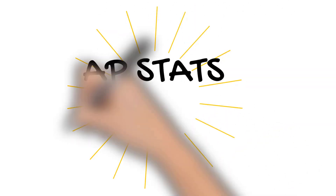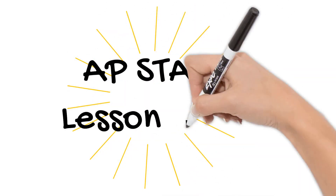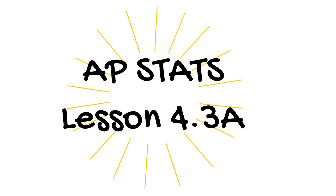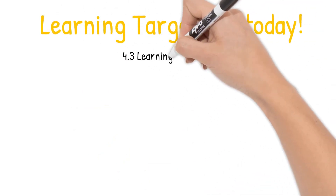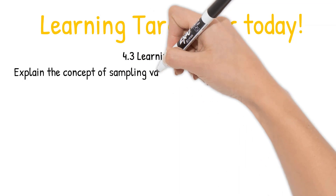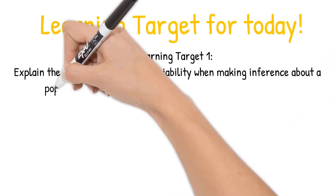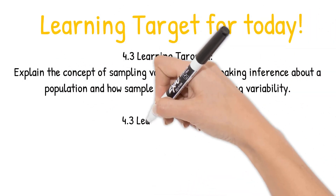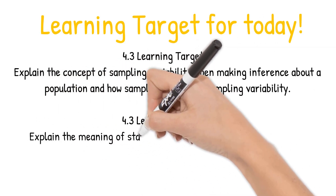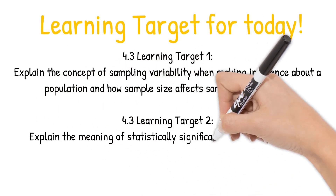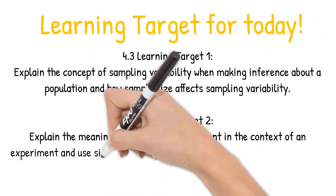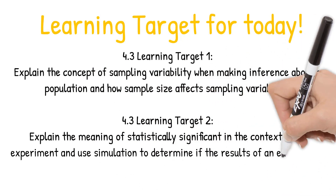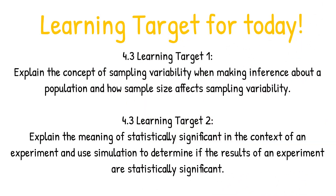Hi, this is Mrs. Morita. Welcome to AP Stats Lesson 4.3a. Two learning targets for today, 4.3.1 and 2. Explain the concept of sampling variability when making inference about a population and how sample size affects the sampling variability. Explain the meaning of statistically significant in the context of an experiment, and use simulation to determine if the results of the experiment are statistically significant.